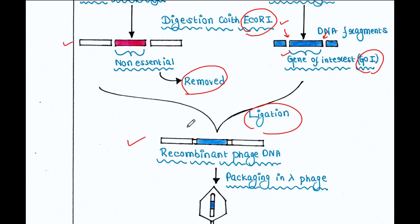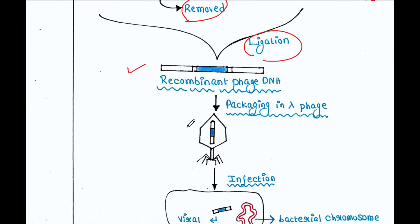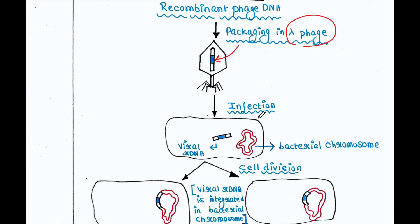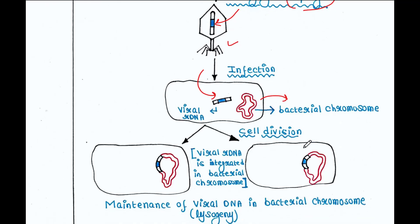This gives us our recombinant phage DNA carrying the gene of interest. We then package this recombinant DNA into the lambda phage head and use it to infect bacterial cells. The genomic content enters the cytoplasm of the bacteria, and then lysogeny occurs — the viral recombinant DNA is integrated into the bacterial chromosome.